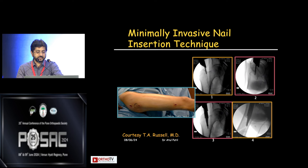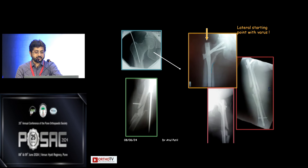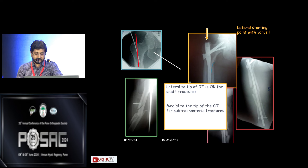In minimally invasive nail insertion technique, the entry point is very, very important — medial to the tip of the trochanter and in the center of the lateral view. With the correct starting point, your reduction falls into place. Proper reduction and proper entry point are mandatory. A lateral starting point will result in varus — that is always important to remember. Entry point lateral to the tip of the greater trochanter is acceptable for shaft femur fractures, but not for IT and subtrochanteric fractures.